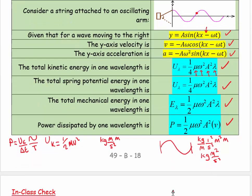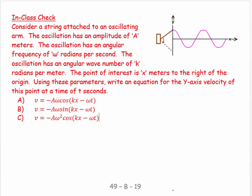So let's have a quick look at what could be a question on something like this. Consider a string attached to an oscillating arm. The oscillation has an amplitude of big A. The oscillation has an angular frequency of ω radians per second. The oscillation has an angular wave number of k radians per meter. The point of interest is x meters to the right of the origin. Using the parameters, write an equation for the y-axis velocity at a time given in t seconds. And this is recall basically.